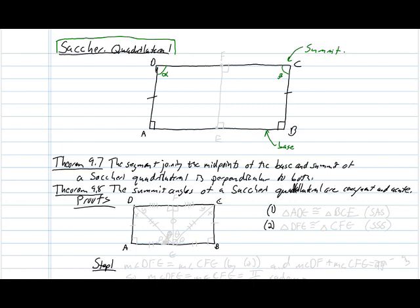Theorem 9.7 is actually an intermediate result. It says if you connect the midpoints of the base and the summit, then that line is going to be perpendicular to the base and to the summit. And since there is a lot of overlap between the proof of the initial part of theorem 9.8 and the proof of theorem 9.7, I'm actually going to prove that all at once in these four steps.